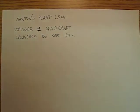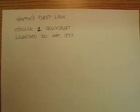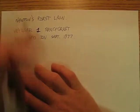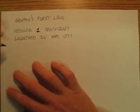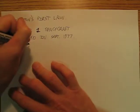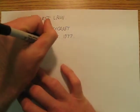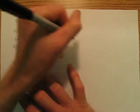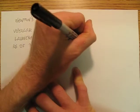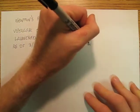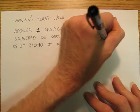I encourage you to go on the internet and look at the Voyager 1 spacecraft website — any information you get on it is very fascinating. The whole point was to get a spacecraft through the entire solar system, and it is now well beyond the solar system. Right now, as of 2010, it was 1.7 times 10 to the 13th meters from the sun.